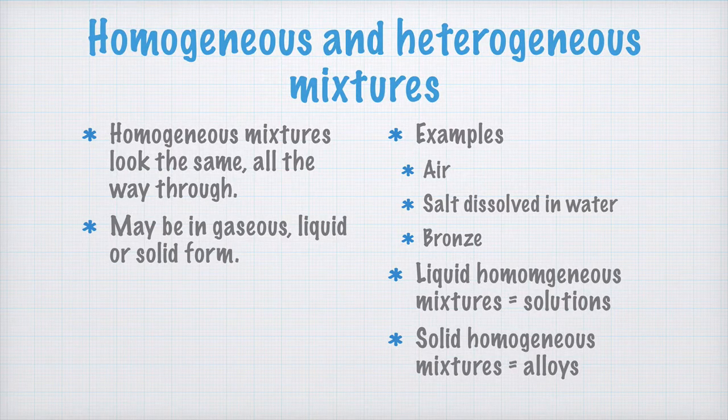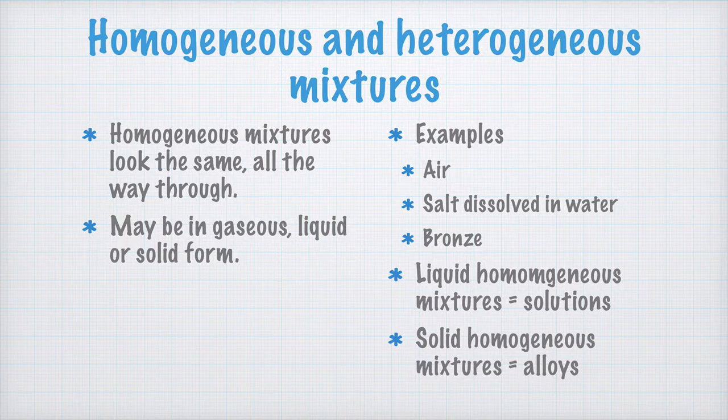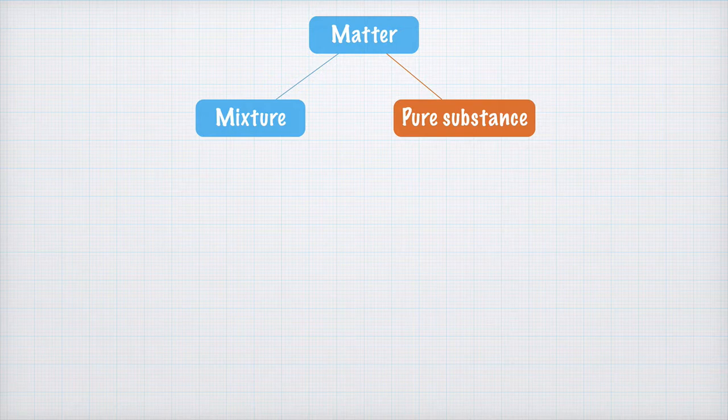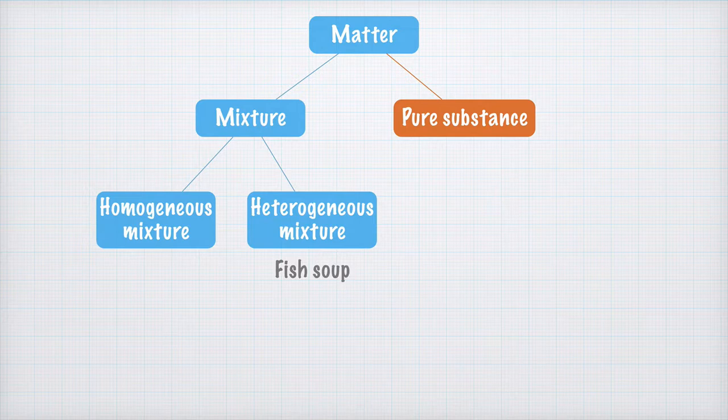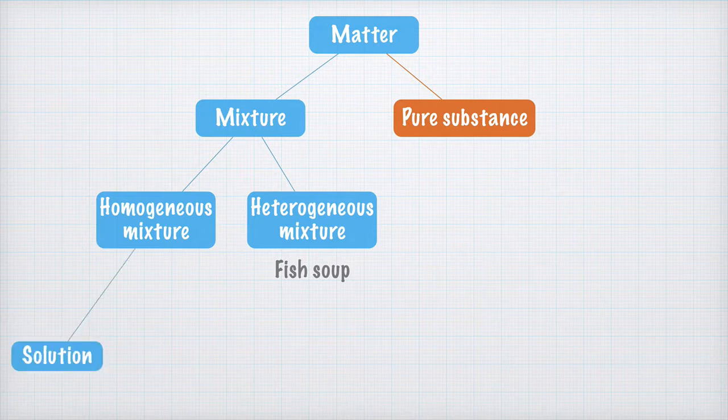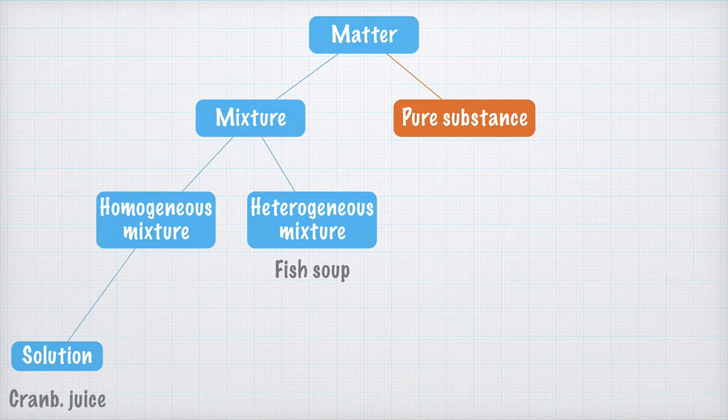Now I've introduced a whole bunch of concepts. So let's draw an overview of the different forms of matter to sort them out. We write matter here at the top of a new page. Matter. It can exist either in the form of mixtures or as pure substances. Mixtures, as I said, can be either homogeneous or heterogeneous. And bouillabaisse is probably my favorite example of a heterogeneous mixture. The homogeneous mixtures are solutions of different kinds. And as an example of a solution, we can write cranberry juice here. It has the same red color in the glass everywhere you look.